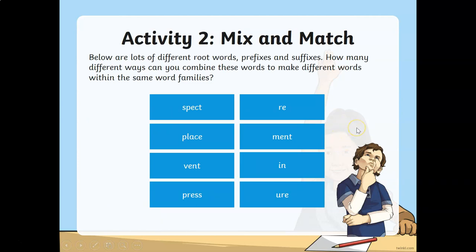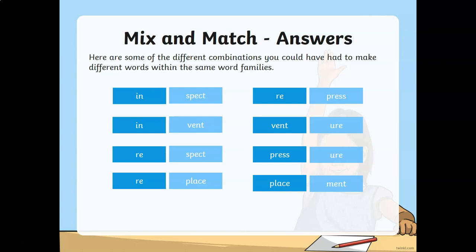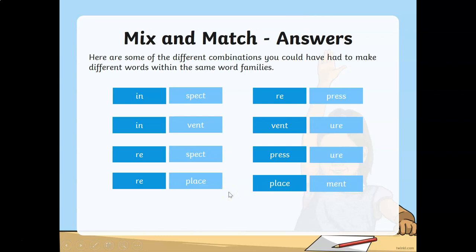Now for the activity: mix and match. I want you to mix the root word from the given prefixes and suffixes. You may write as many words as you can. Pause the video and write down your answers. Here are the possible answers: 'in' plus 'spec' gives inspect; 'in' plus 'vent' gives invent; 're' and 'spec' gives respect; 're' and 'place' gives replace; 're' and 'press' gives repress; 'vent' and '-ure' gives venture; 'press' and '-ure' gives pressure; 'place' and '-ment' gives placement. Or you may think of another combination.